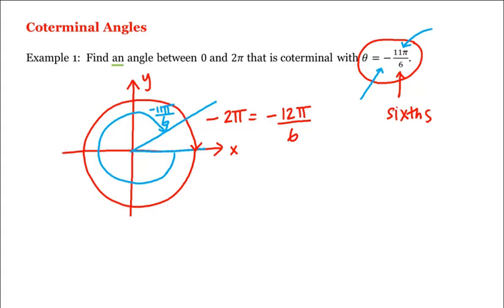Therefore the angle that we're looking for between 0 and 2π that has the same initial and terminal side as θ is this angle here, π divided by 6, which would be our answer.